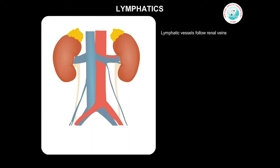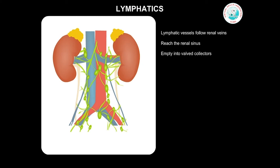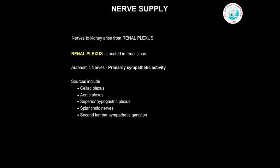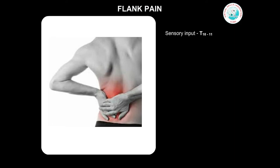The lymphatic vessels follow the renal veins both in cortex and medulla. They reach the renal sinus where they empty into valved collectors and accompany the renal vein out of the hilum. They then drain into the right and left para-aortic, common iliac, internal and external iliac lymph nodes. The nerves to the kidney arise from the renal plexus that is located in the renal sinus. The renal plexus is composed of a large number of autonomic nerves that primarily have sympathetic activity from various sources including the coeliac plexus, aortic plexus, superior hypogastric plexus, splanchnic nerves and the second lumbar sympathetic ganglion. Parasympathetic supply comes from the vagus. Sensory input from the kidney travels to the T10–11 levels of the spinal cord; thus, pain from the kidney is referred to the corresponding dermatome in the flank region.